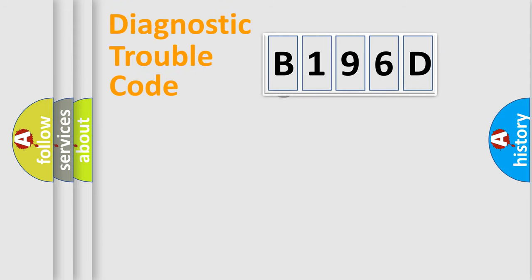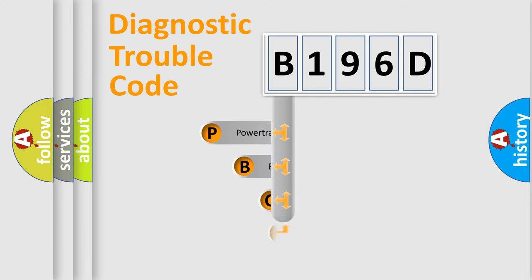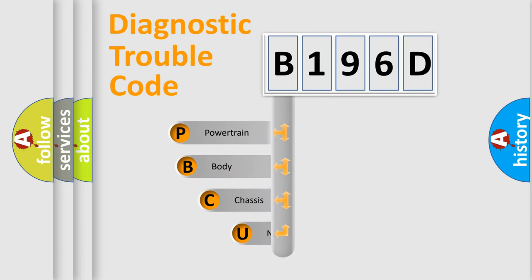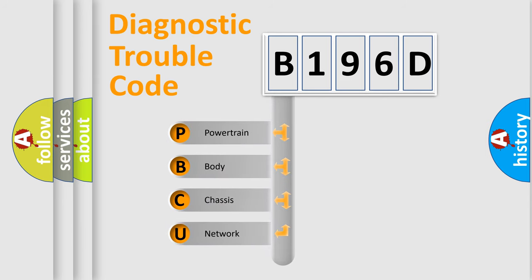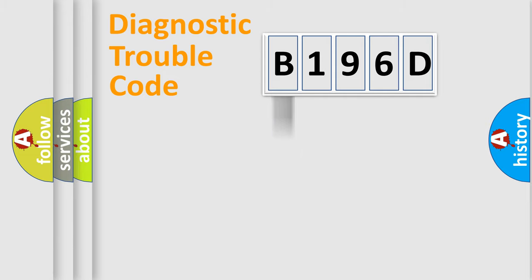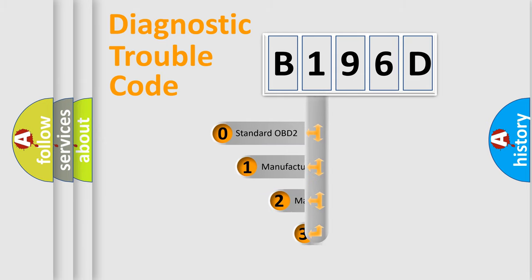First, let's look at the history of diagnostic fault code composition according to the OBD2 protocol, which is unified for all automakers since 2000. We divide the electric system of an automobile into four basic units: Powertrain, Body, Chassis, and Network. This distribution is defined in the first character of the code.